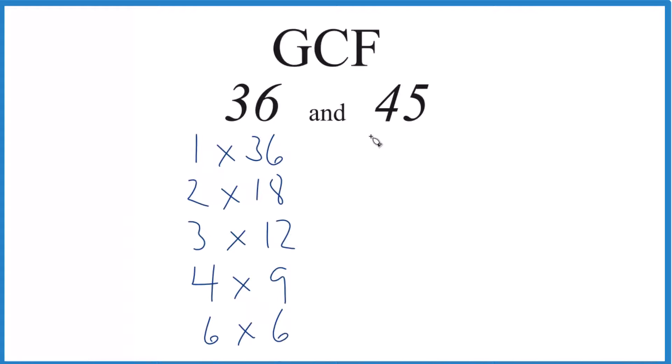And for 45, let's see, one times 45, that's 45, three times 15, and then five times nine, that equals 45. These are the factors for 45.